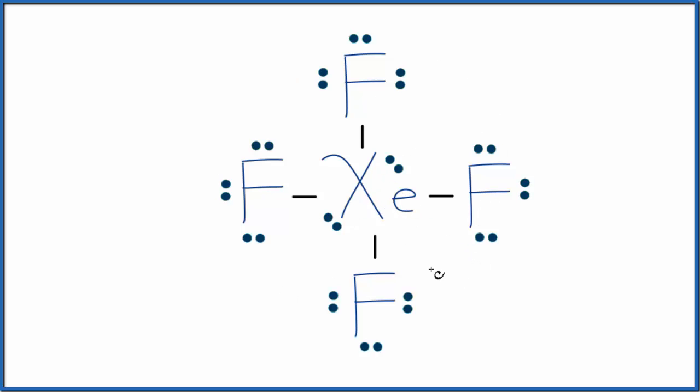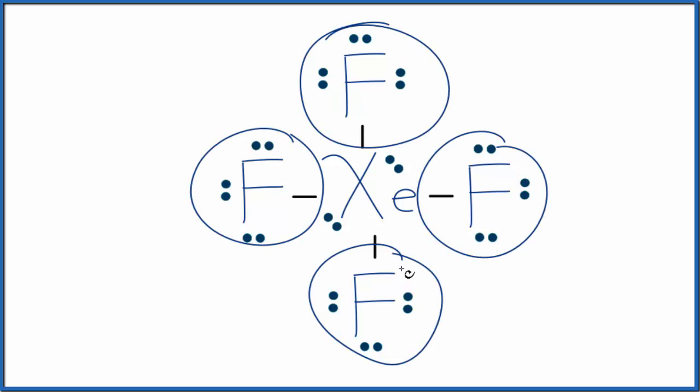This compound actually does exist—the xenon bonds to the fluorine atoms. To find the molecular geometry, we can imagine that these four fluorine atoms are all pushing against each other and spreading out, and these lone pairs here are pushing against each other and the fluorines. Everything's spreading out, and that's how we come up with the molecular geometry for xenon tetrafluoride.